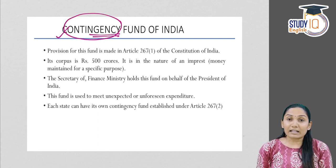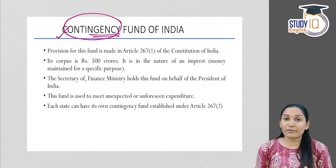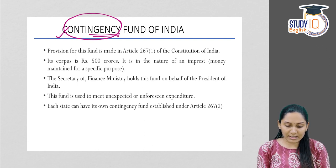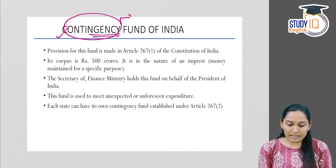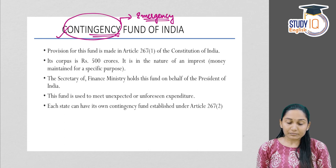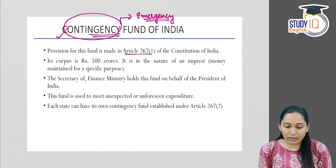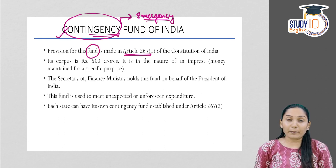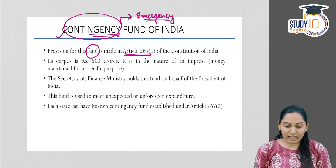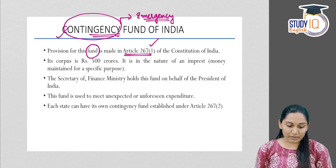From the name itself it is clear — contingency. This fund is created for a contingency or emergency situation. The Contingency Fund of India is for an emergency or unexpected situation. The provision for this fund has been made in Article 267-1 of the Constitution of India.